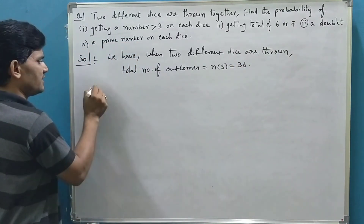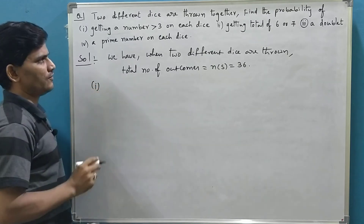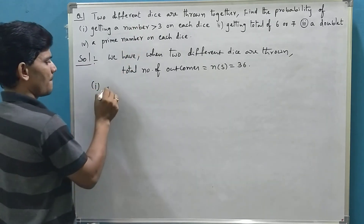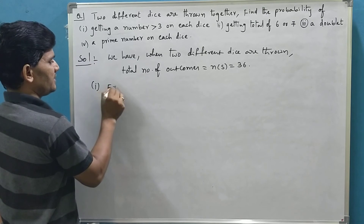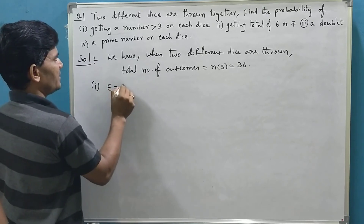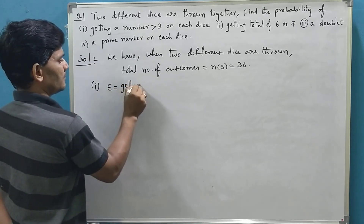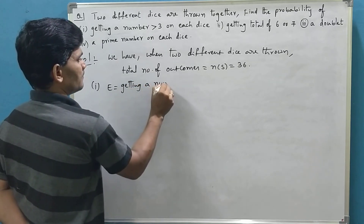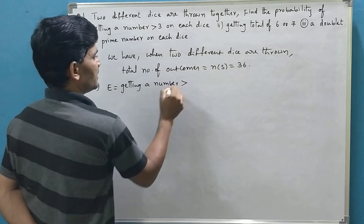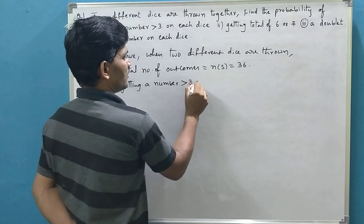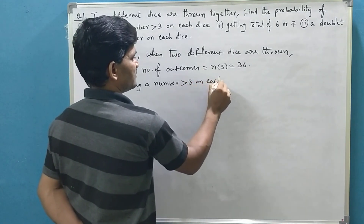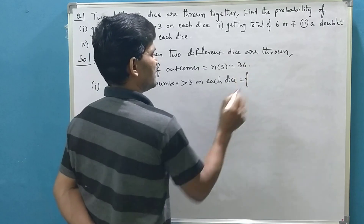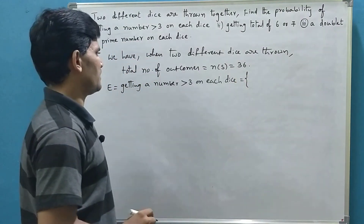Now let us see the probability of getting the first event. Let E be the event of getting a number greater than 3 on each dice. Let us see what the favorable outcomes are.